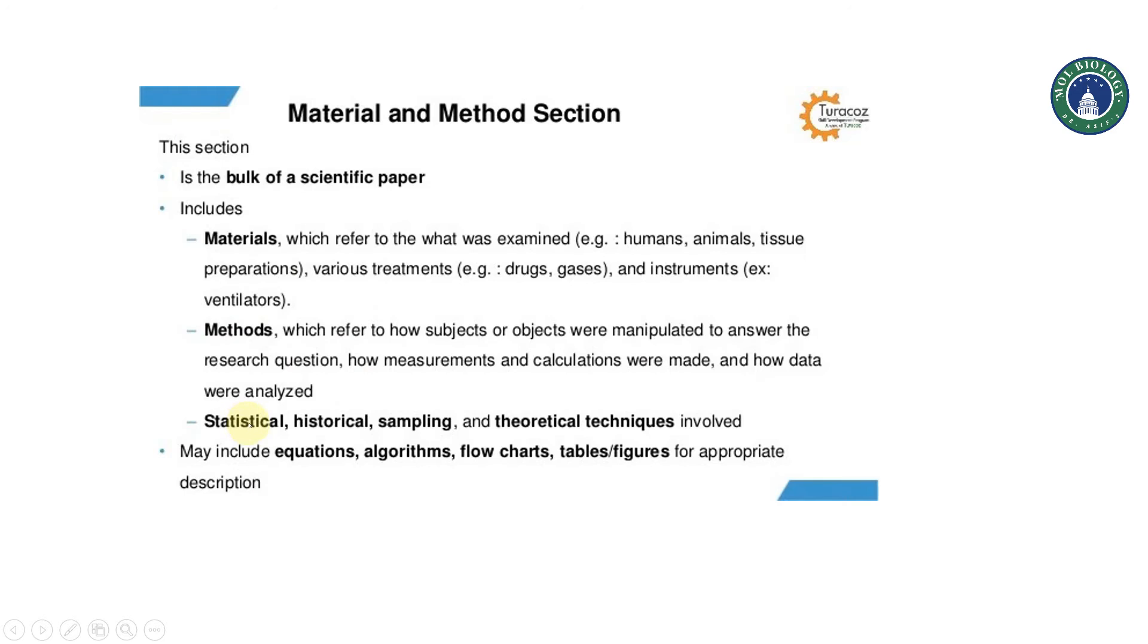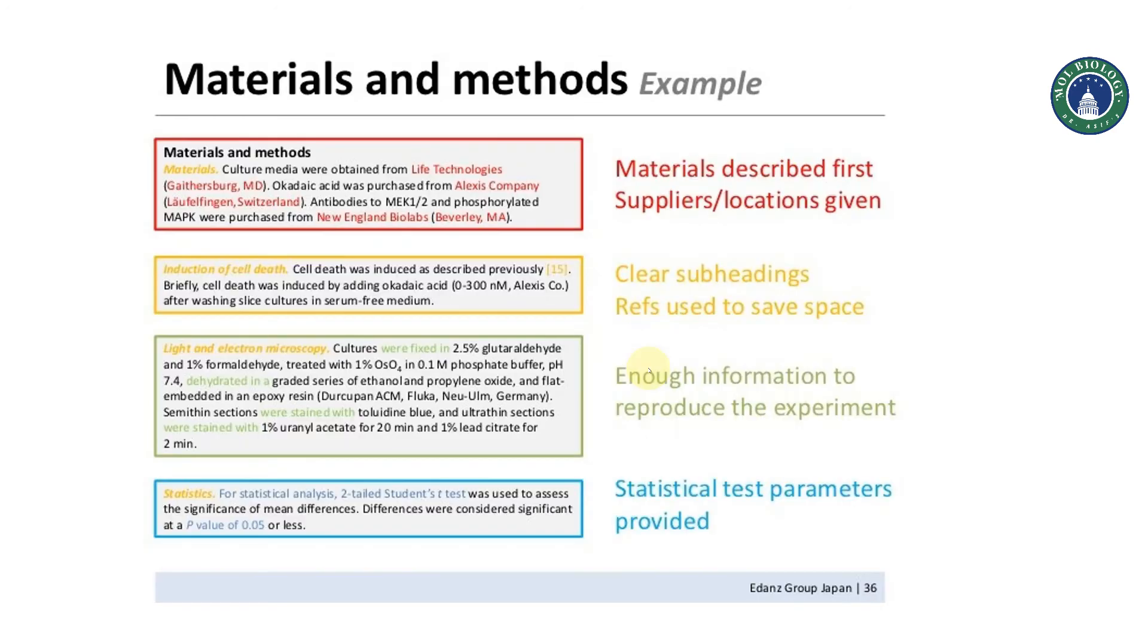The third important is the statistical, historical, sampling, and theoretical techniques you used. You can also include equations, algorithms, flowcharts, table figures for appropriate description. But sometime depending upon the research area, maybe there are some things which don't need, but it is a journal flow you can decide either it is important or not.